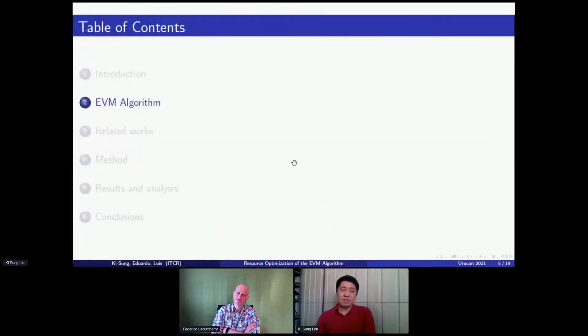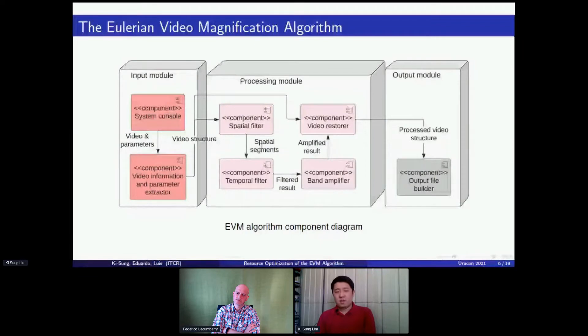Explaining the Eulerian video magnification algorithm, we have the next diagram and we show the different components of the algorithm. As we see, we can see that the algorithm divides in three modules: the input module, the processing module, and the output module.